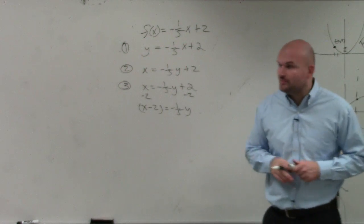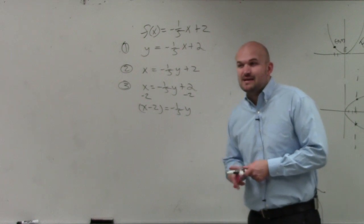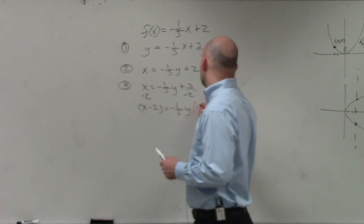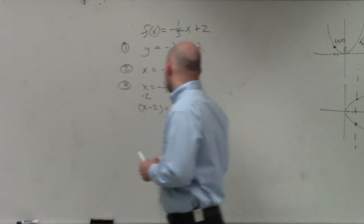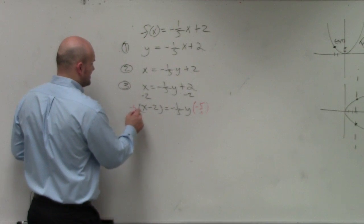Therefore, to get rid of multiplying by negative 1 fifth, I could divide by negative 1 fifth. But instead of dividing by a fraction, I always prefer to multiply by the reciprocal. So negative 5 over 1. And you guys agree with me that negative 5 over 1 is really just the same thing as negative 5.